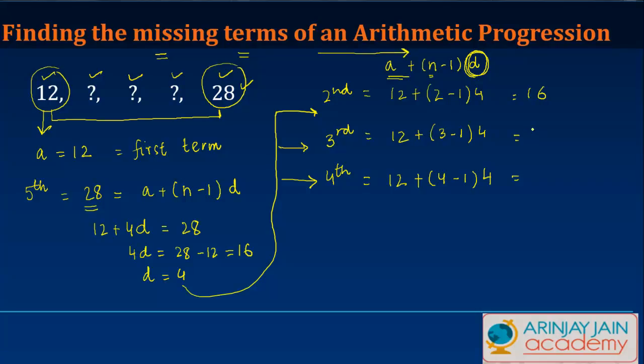The third term is going to be 20. 3 minus 1 is 2, 2 times 4 is 8, 8 plus 12 is 20. Similarly this is going to be equal to 24.